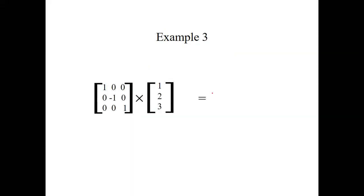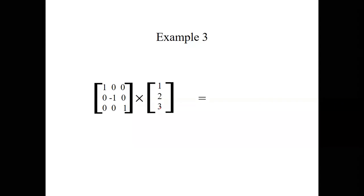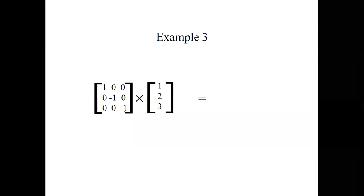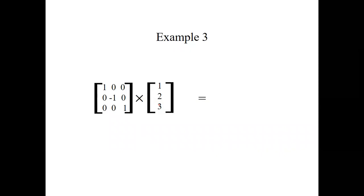Now let's do a third example: multiplying a 3×3 matrix with a 3×1 matrix. For the first matrix i=3 and k=3; for the second matrix the number of rows is 3 and the number of columns is 1. The number of columns of the first equals the number of rows of the second, so they can be multiplied.